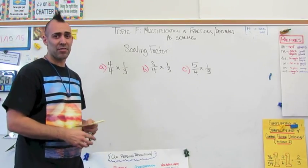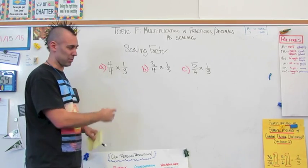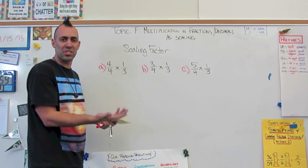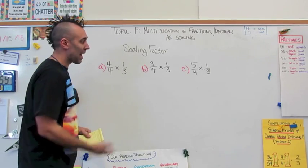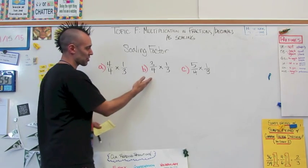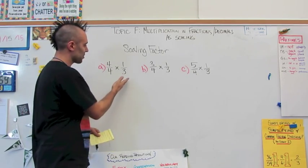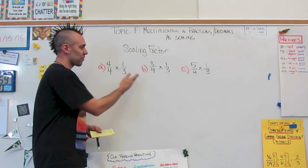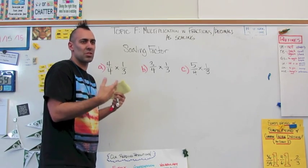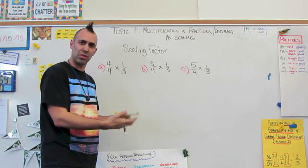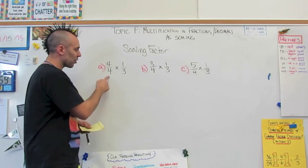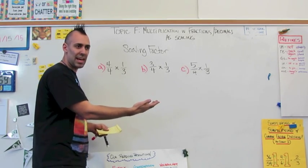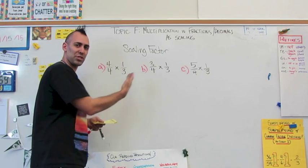The next thing we're going to have kids look at is the scaling factor. We're going to have a series of multiplication problems and have them look at each one to determine what's the difference between each of these three. That difference is this first fraction, which we call the scaling factor. The second fraction, one-third, is consistent throughout each of these problems. But the scaling factor will help kids figure out what the value of the product will actually be.